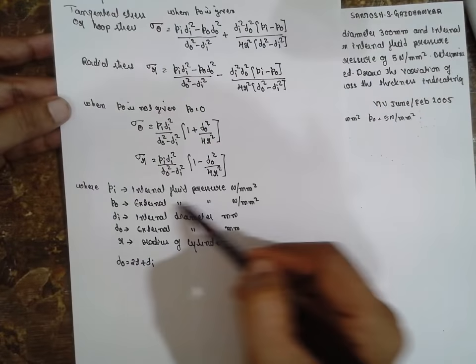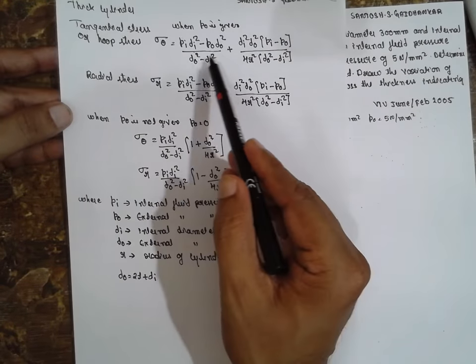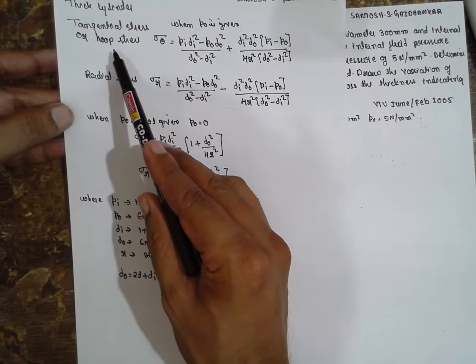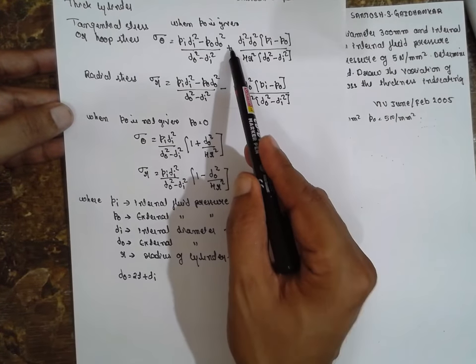The notations are written here. The only difference between the tangential and radial stress is positive sign and negative sign.